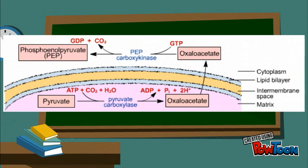To review the conversion of pyruvate to phosphoenolpyruvate: it requires energy input and carboxylation and decarboxylation steps.